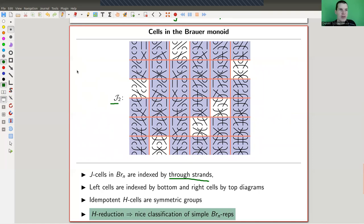You can easily show that the J cells are indexed by the through strands. So in steps of two, because you only have those operations which remove two. So for Br4, which is my example here, you have J2, you have J4, and you have J0. And they always look kind of the same type of picture. In the left cells, you fix the bottom. In the right cells, which are the rows, you fix the top picture. You just stack them together. And that's your cell structure.